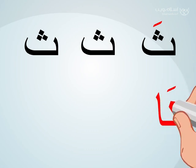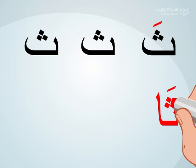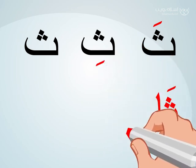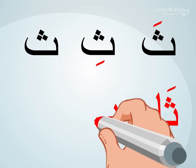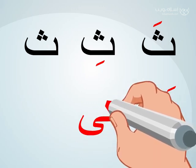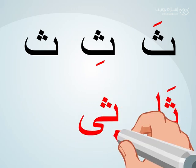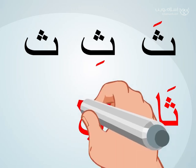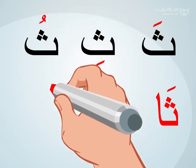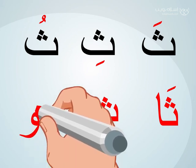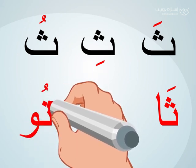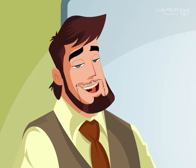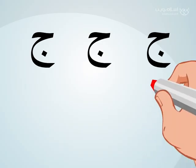Then we add Mad Alif and pronounce 'thaa'. We write the Tha with Kasra and pronounce 'thi', then we add the Mad Ya and pronounce 'thii'. We write the Tha with Dham and pronounce 'thu', then we add Mad Waw and pronounce 'thuu'.